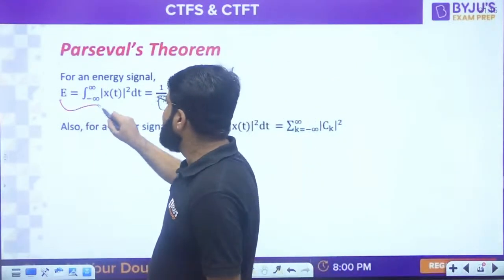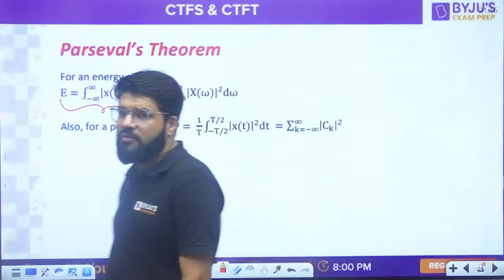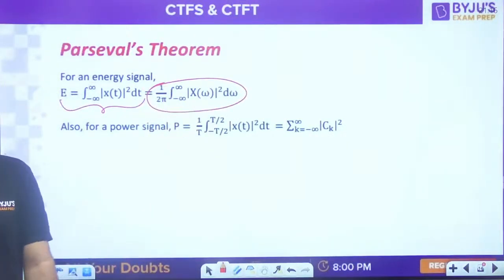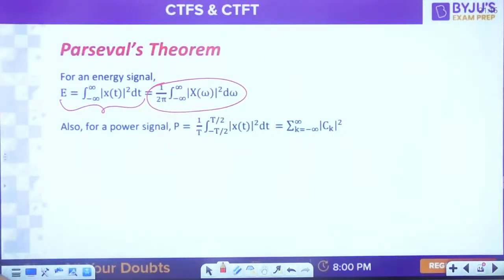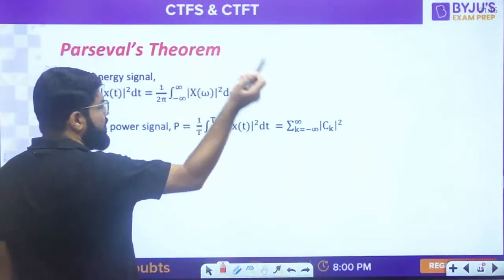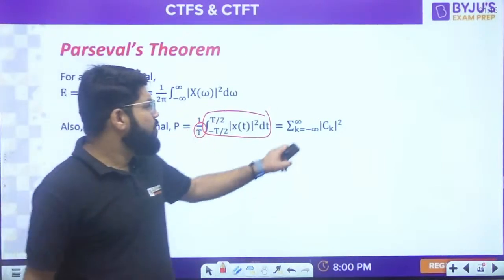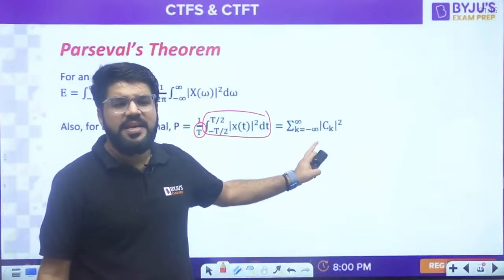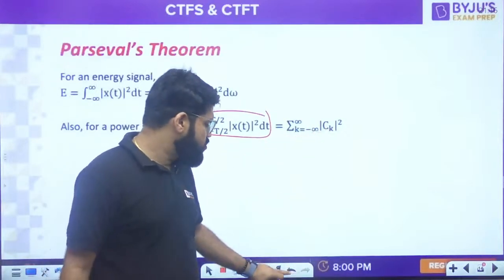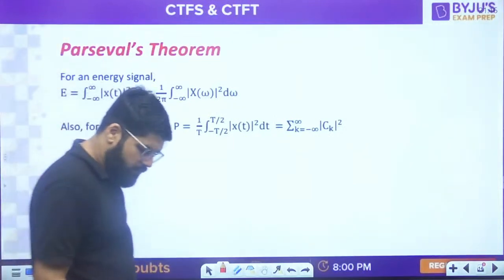Parseval's theorem enables finding energy for energy signals or power for power signals. Energy = integral of |x(t)|² dt = (1/2π) integral of |X(ω)|² dω. For a power signal, power = energy in one time period divided by time period, and that equals summation of |Cₖ|² where Cₖ is the Fourier series coefficient of that periodic signal.